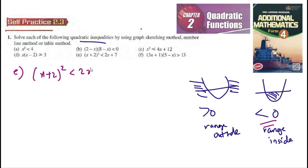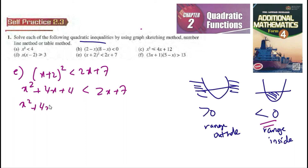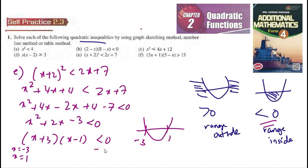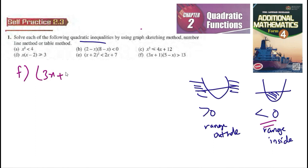For part e, (x plus 2)² is smaller than 2x plus 7. Expanding gives x² plus 4x plus 4 is smaller than 2x plus 7. Rearranging: x² plus 2x minus 3 is smaller than 0. Setting equal to zero gives x equals negative 3 and x equals 1. Drawing the sketch gives negative 3 and 1. Since it's smaller than 0, the range is inside, so x is in between negative 3 and 1 (strictly, not or equal to).